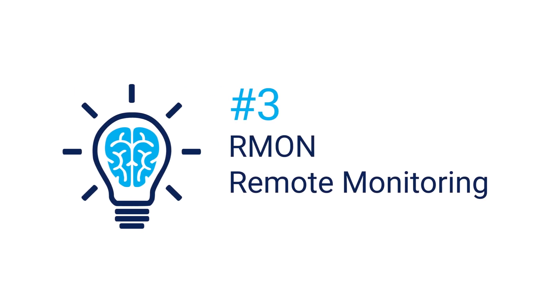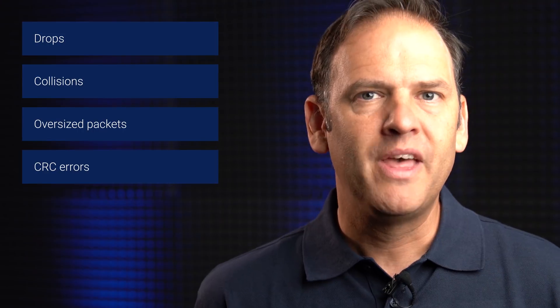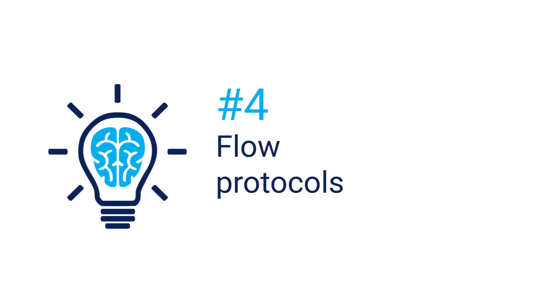If specific ports have spikes in traffic, you know that devices connected to those ports are causing problems. RMON, or remote monitoring, is about as in fashion right now as sandals and socks. But it's still a useful extension to SNMP that you can consider. It gives you the number of drops, collisions, oversized packets, CRC errors and more. It doesn't directly tell you who's hogging your bandwidth, but it may point you in the direction of the network rather than a specific user.